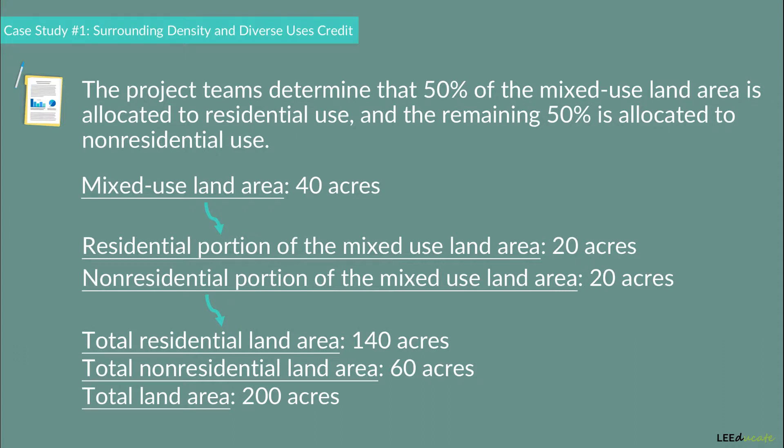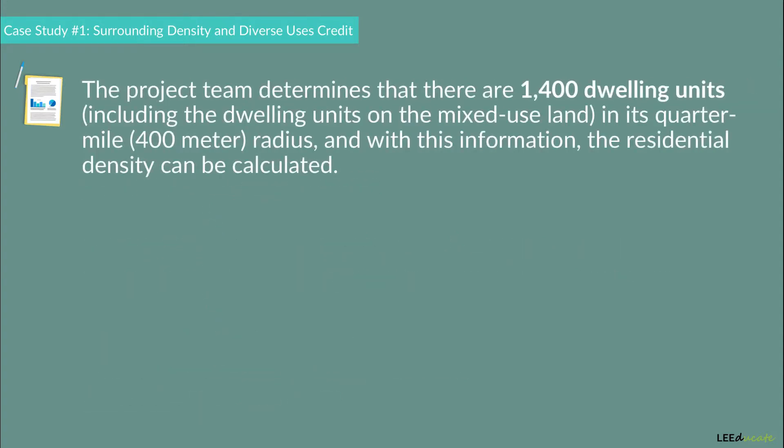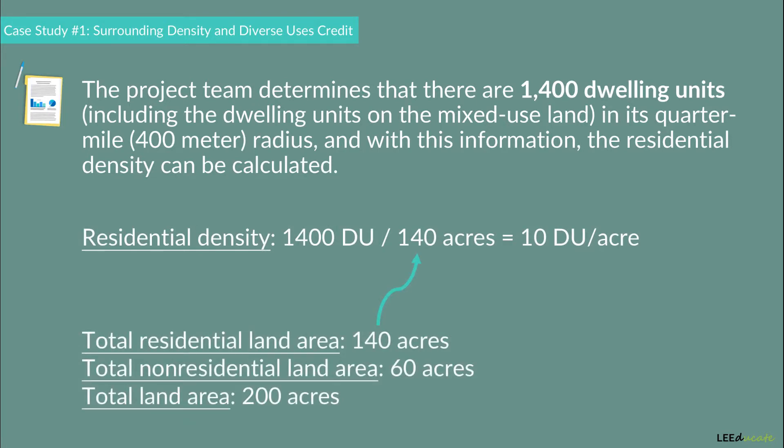The project team determines that there are 1,400 dwelling units — including the dwelling units on the mixed-use land — in the quarter-mile or 400-meter radius of the project boundary. With this information, the residential density can be calculated: 1,400 dwelling units divided by 140 acres equals 10 dwelling units per acre, which is the residential density.